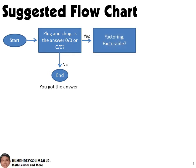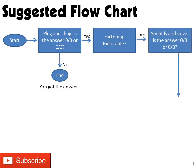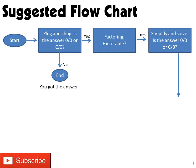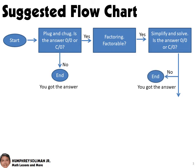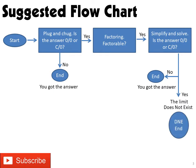Our other option is factoring. If the function is factorable, we might be able to cancel out common factors and simplify the function, and we might be able to solve the limit using plug and chug after factoring. If the result is not a constant over 0 or a 0 over 0, that's already the answer. But if the result is a constant over 0 or a 0 over 0, we can use DNE — the limit does not exist.